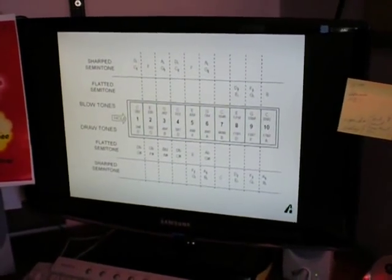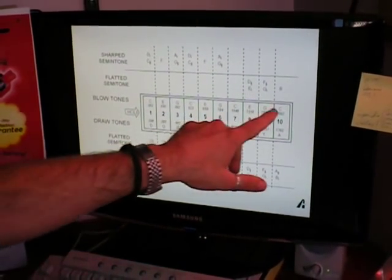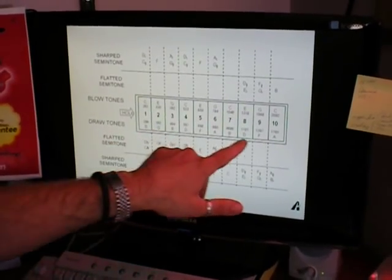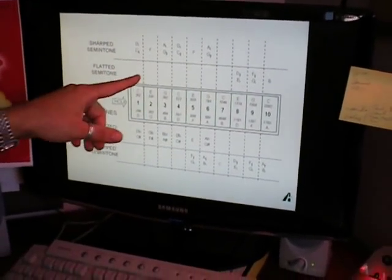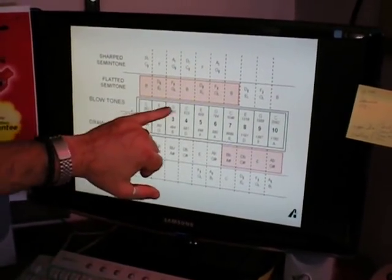So consequently, the notes that you normally get on the harmonica, here they're shown for the blow notes and the draw notes, are expanded so that you can hit these missing notes that are the flatted blow notes.